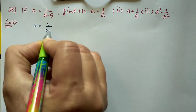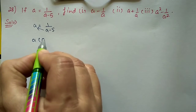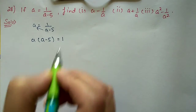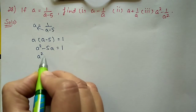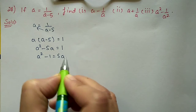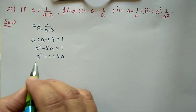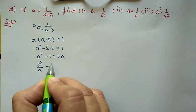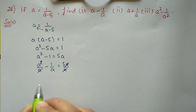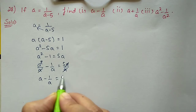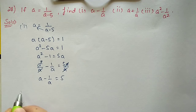Since a = 1/(a − 5), we cross-multiply: a(a − 5) = 1, giving a² − 5a = 1, then a² − 1 = 5a. Dividing by a: a²/a − 1/a = 5a/a, which simplifies to a − 1/a = 5. This is our first part, obtained directly.